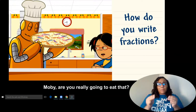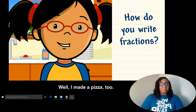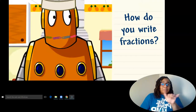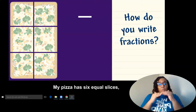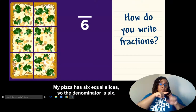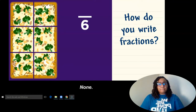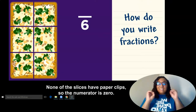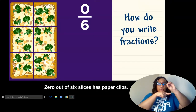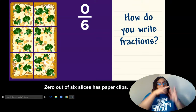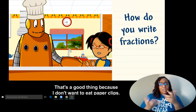Moby, are you really going to eat that? Well, I made a pizza, too. My pizza has six equal slices. So the denominator is six. How many slices have paperclips? None. None of the slices have paperclips. So the numerator is zero. Zero out of six slices has paperclips. That's a good thing, because I don't want to eat paperclips.